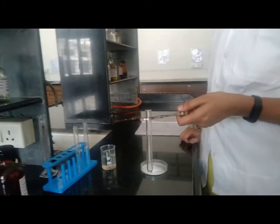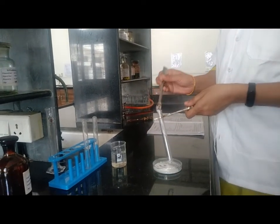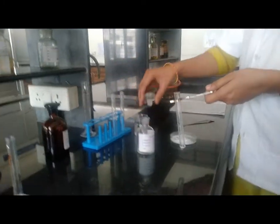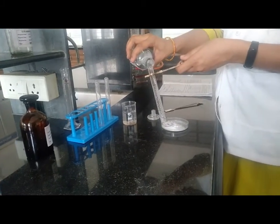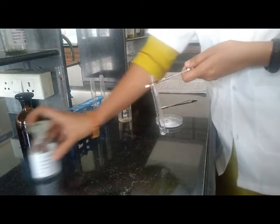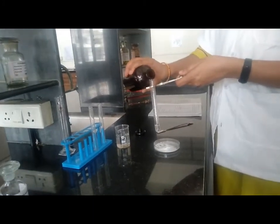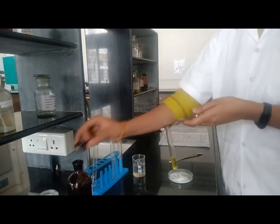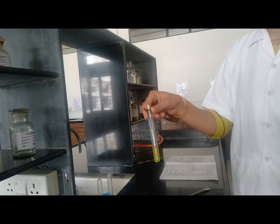Now next test: we have to acidify the solution containing our compound with 1 molar acetic acid. For that we have to take sample, then add 1 molar acetic acid for acidifying. Then add excess of magnesium uranyl acetate. After addition of excess of magnesium uranyl acetate, we got yellow precipitate.